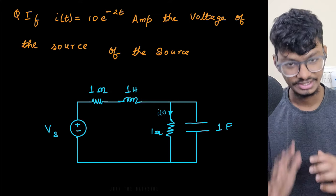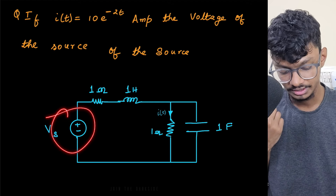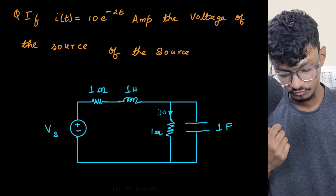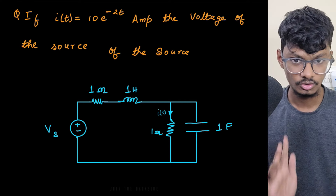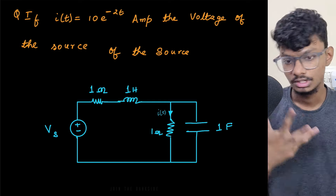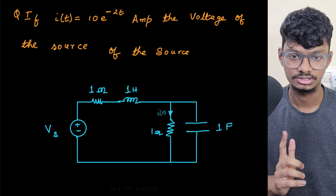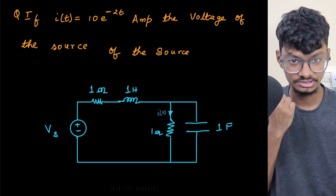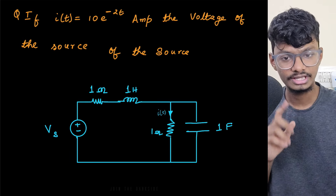Today's question is pretty simple: you just have to find the source voltage expression if the current i(t) is given. Now this is a second-order circuit, so you can't do it with a simple exponential response. As a second-order circuit, we have to go step by step — and without using Laplace. Can you solve it without using Laplace?